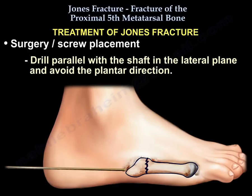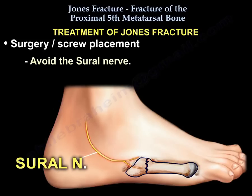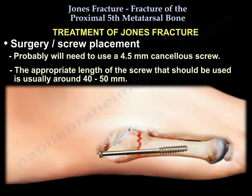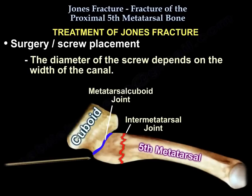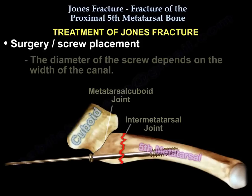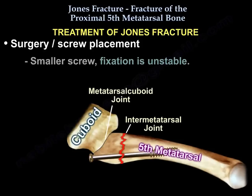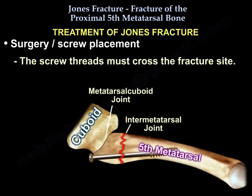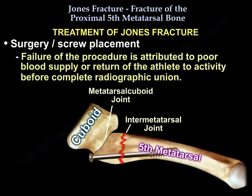Drill parallel with the shaft in the lateral plane and avoid a plantar direction. Avoid the sural nerve. You will likely need to use a 4.5 mm cancellous screw, with an appropriate length of around 40 to 50 mm. The diameter of the screw depends on the width of the canal — a smaller screw will result in unstable fixation, while a larger screw may displace the fracture. The screw threads must cross the fracture site. Failure of screw fixation is attributed to poor blood supply or return of the athlete to activity before complete radiographic healing.